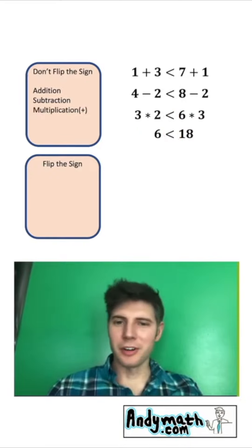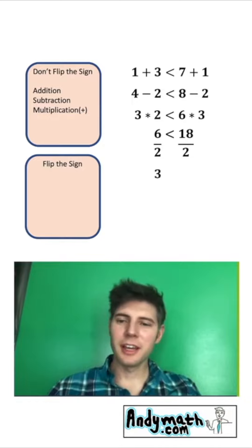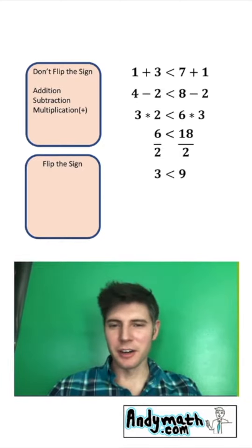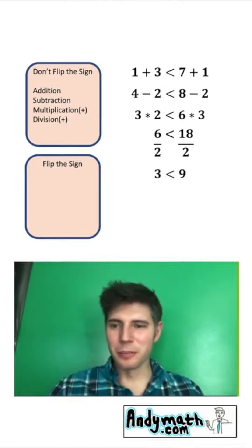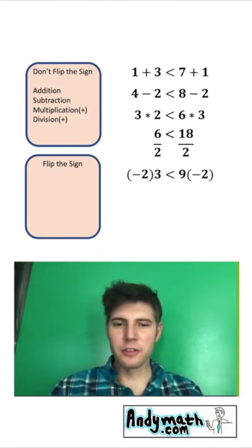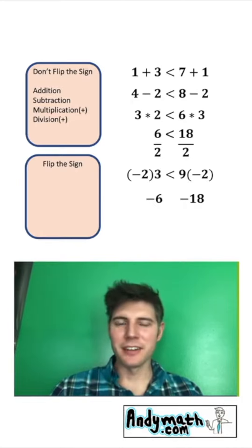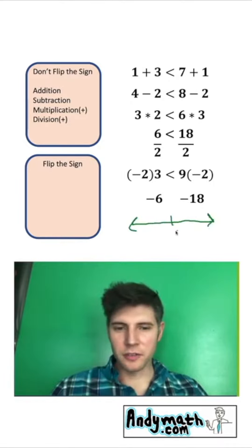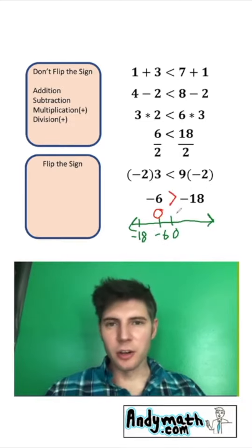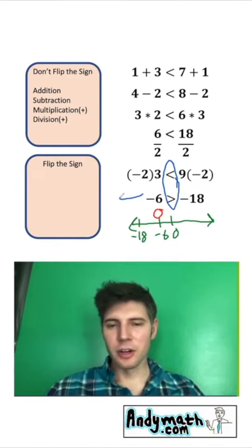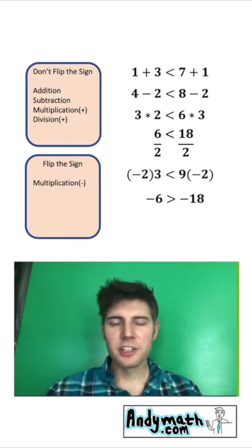Now let's test multiplication by a negative number. Multiply both sides by negative 2. Negative 2 times 3 is negative 6, and 9 times negative 2 is negative 18. Which one is larger? On a number line, negative 6 would be here and negative 18 would be way down here, so negative 6 is the larger number — meaning the sign goes this way. It did change direction, so under 'flip the sign' we'll put multiplication by a negative number. For division by a negative number: divide both sides by negative 3. Negative 6 divided by negative 3 is 2; negative 18 divided by negative 3 is 6. Six is larger, and once again the sign changed direction — so division by a negative goes in the flip box.